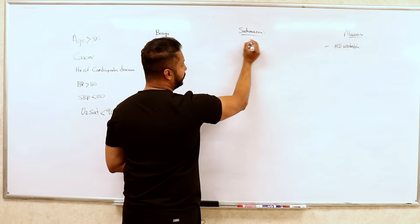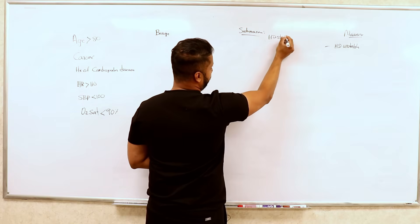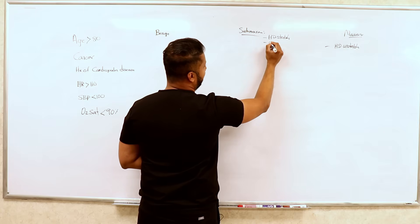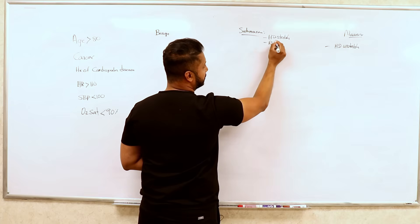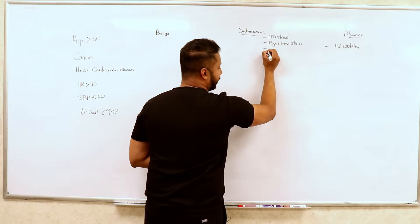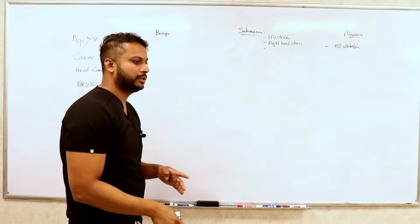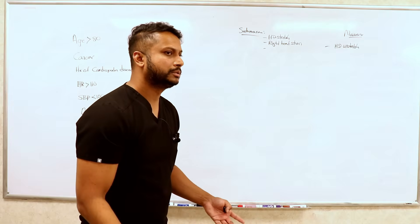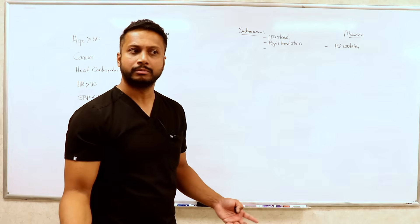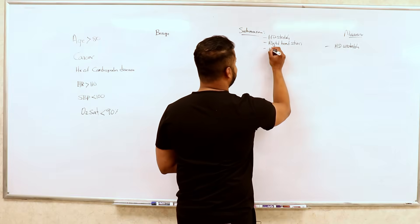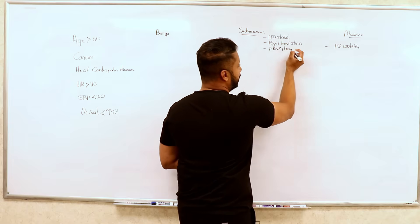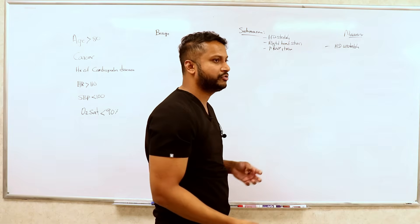So when you say sub-massive, you will be hemodynamically stable and you will have some evidence of right heart strain. Whenever your right heart is strained, what would you release? Troponin and BNP. Those are two things you always check in your patient with PE, so you will have elevated BNP and elevated troponin.